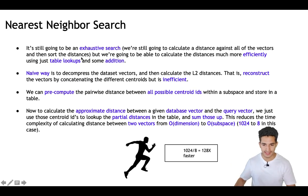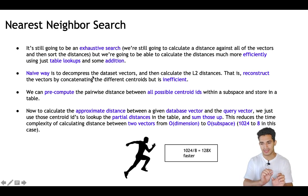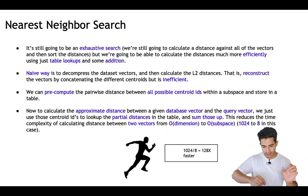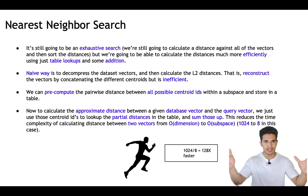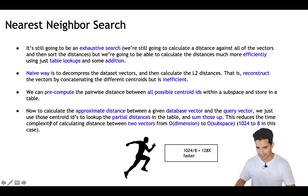Now in this compressed data, it is still going to be an exhaustive search — for a given query vector we will search across all the data points. One option is to decompress each centroid ID back to its actual 128 numbers and calculate the L2 distance. But that's not needed. What we can do instead is pre-compute the pairwise distances between all possible centroid IDs.